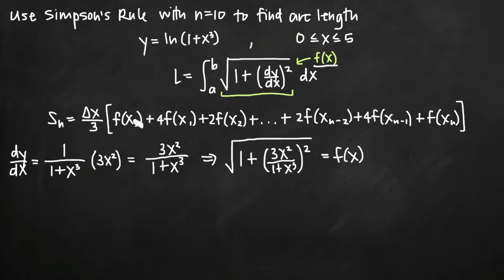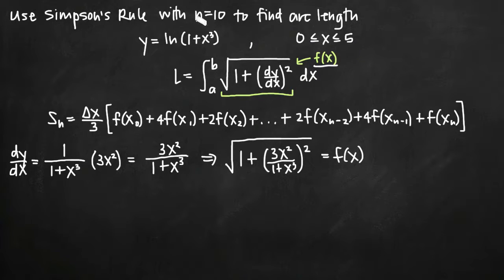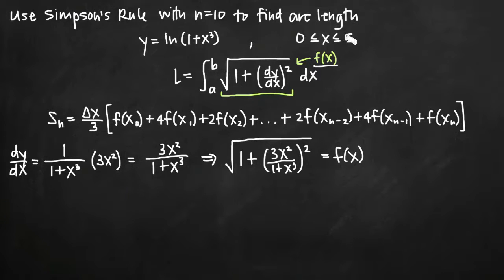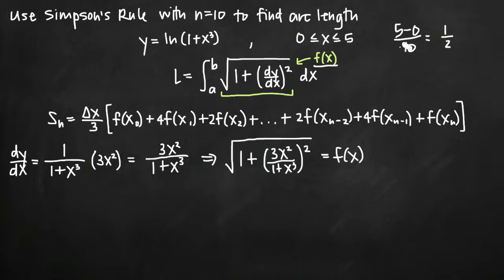So now that we know our function, we can proceed to the Simpson's rule approximation. The next thing we need to do is figure out what our values of x sub 0, x sub 1, x sub 2 are going to be. We do that using the interval and the value of n. Our interval is between 0 and 5, and we've been told to use 10 subintervals. We find delta x by taking the upper value of the interval 5, subtracting the lower value 0, and dividing by n which is 10. We get 5 over 10, which equals 1 half. So our delta x is 1 half.